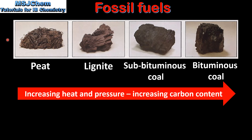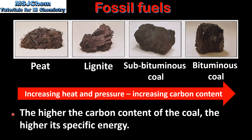Next we look at different types of coal formed under different conditions of heat and pressure. From left to right we have peat, lignite, sub-bituminous coal and bituminous coal. As we go from left to right there is increasing heat and pressure and also increasing carbon content. The higher the carbon content of the coal, the higher its specific energy. So peat would have the lowest specific energy and bituminous coal the highest.